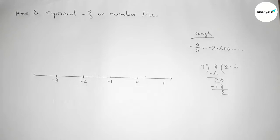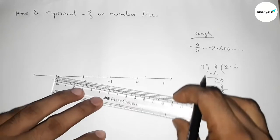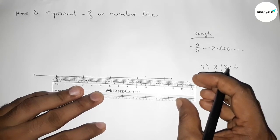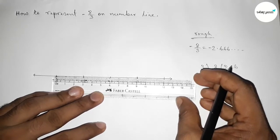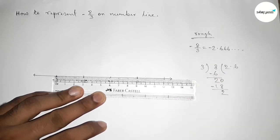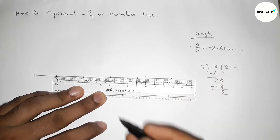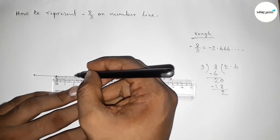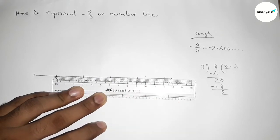Now we have to divide the length between minus two and minus three into three equal parts approximately by using scale. The length between minus two and minus three equals to three centimeter and this is divided equally into equal parts.